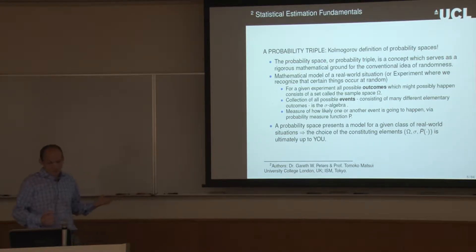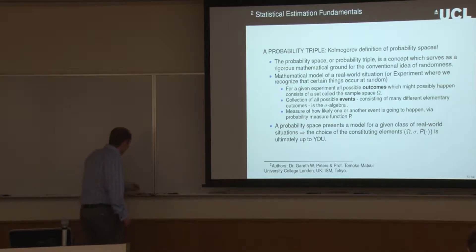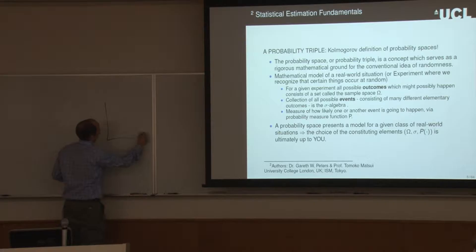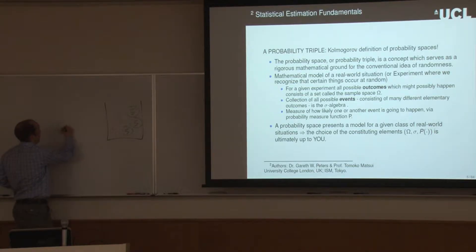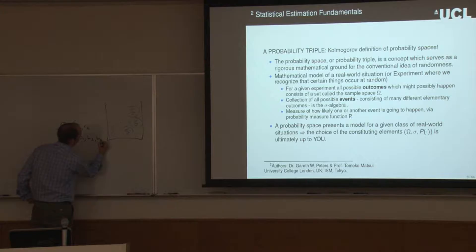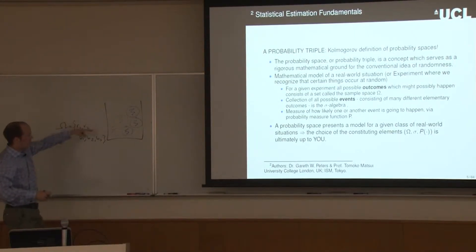For a given experiment, all possible outcomes which might happen consist of a set called the sample space. As a simple example, say our experiment is drawing one ball from a bucket which consists of two red balls and three blue balls. Our sample space omega is: red ball one, red ball two, blue ball one, blue ball two, and blue ball three. Each of these is a possible outcome. Omega is this space of possible outcomes.